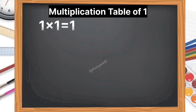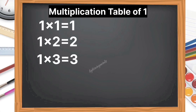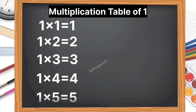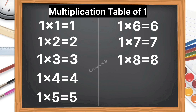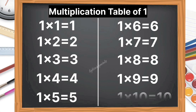1 1s are 1, 1 2s are 2, 1 3s are 3, 1 4s are 4, 1 5s are 5, 1 6s are 6, 1 7s are 7, 1 8s are 8, 1 9s are 9, 1 10s are 10.